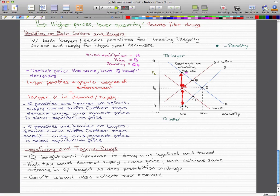And the last thing I want to talk about is legalizing and taxing drugs. So, the quantity bought could decrease if drugs was legalized and taxed. Actually, what would happen is if we put a high tax on drugs, that could decrease supply, raise the price, and achieve the same decrease in quantity bought as does a prohibition on drugs.